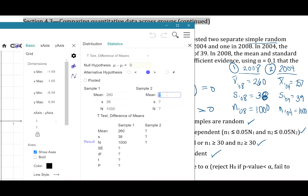For sample two, that data is from 2004, so a mean of 257 in that sample, a standard deviation from the sample of 39, and a sample size 1,000.